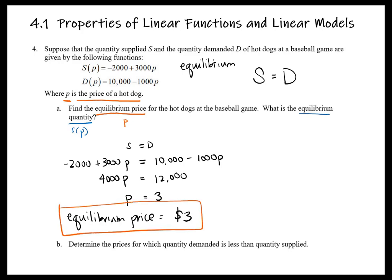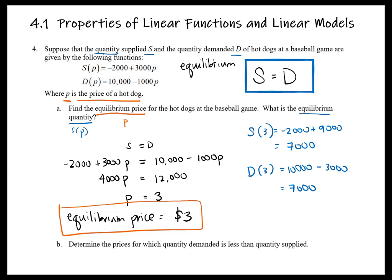To find the equilibrium quantity, we plug the equilibrium price of $3 into either function. Calculating s(3): −2000 + 9000 = 7000. Calculating d(3): 10000 − 3000 = 7000. Both give the same answer, which makes sense since equilibrium means supply equals demand. The equilibrium quantity is 7,000 hot dogs.